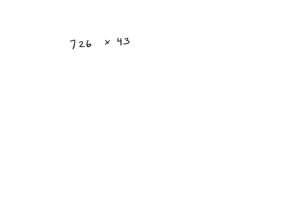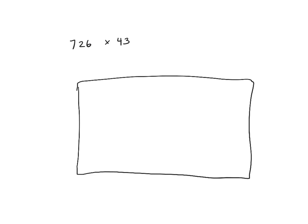Lastly, let's look at a three digit by two digit multiplication problem — and we could also think of this as a two digit by three digit using the commutative property: 43 times 726. My first step is to draw a large rectangle to represent the rectangular array of 726 by 43, making 726 the long side and 43 the shorter side. I'm going to write 726 in expanded form: the 7 is worth 700, the 2 is worth 20, and the 6 is worth 6. I'm also going to write 43 in expanded form: the 4 is worth 40, and the 3 is worth 3.